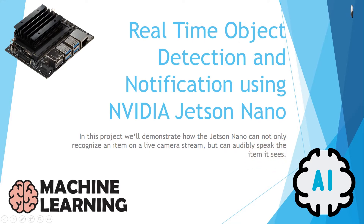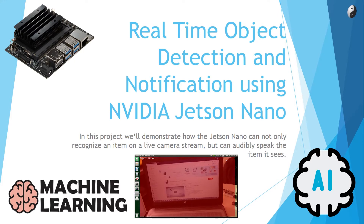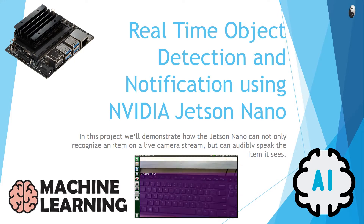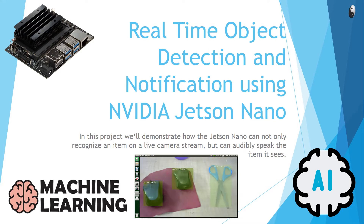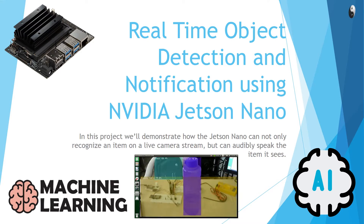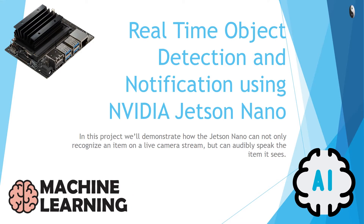In an earlier video, we have seen that Jetson Nano detects multiple objects on a live video stream. In this video, Jetson Nano can not only detect an item on a live camera stream but also announce the name of whichever item it sees on camera.